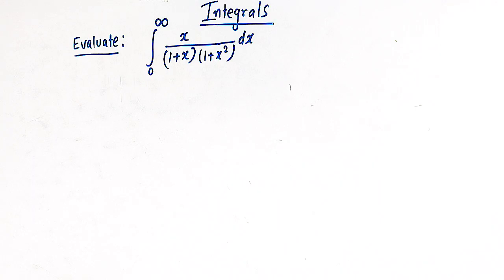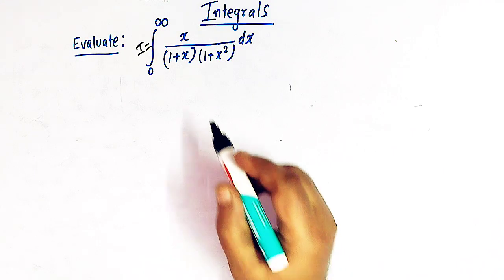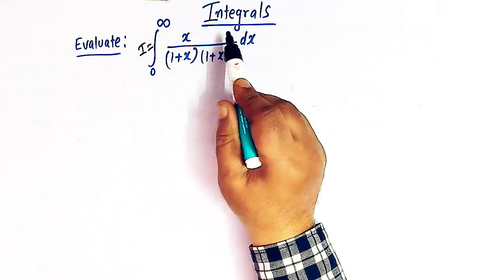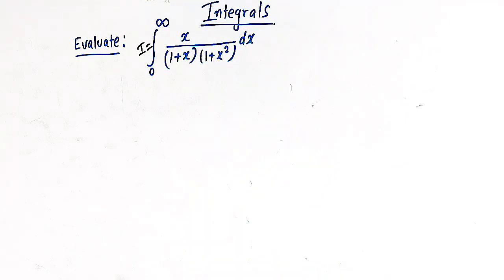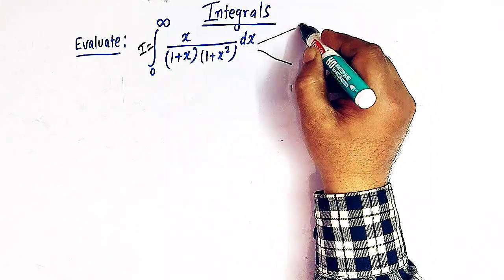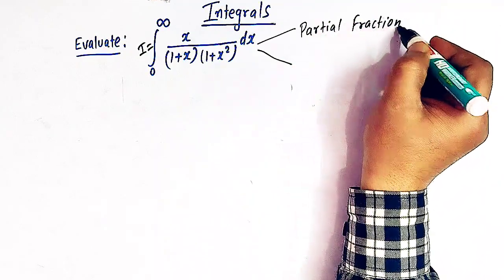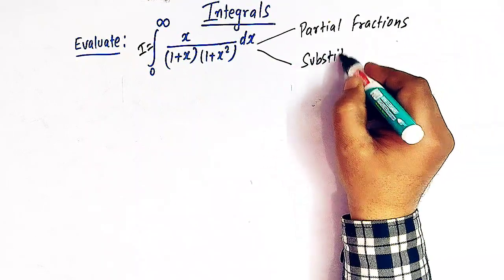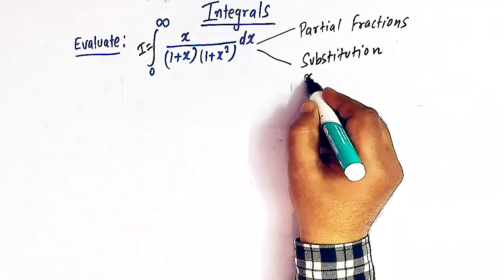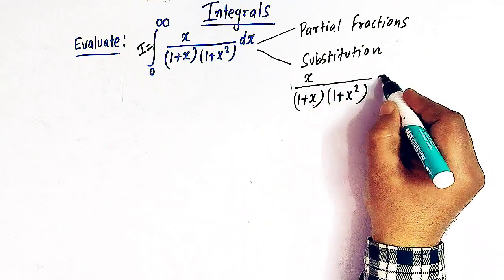We will take this integral as I. If we closely inspect this integrand, we can see that we can resolve it into partial fractions. So this integral can be solved by two methods: one by the method of partial fractions, and the other by the method of substitution.